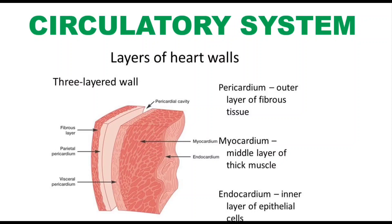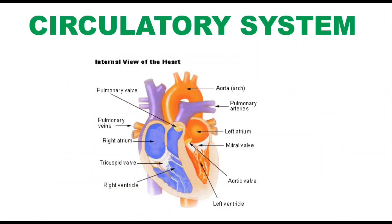The heart has three layers: the pericardium, which is the outer layer of fibrous tissue; the myocardium, which is the middle layer of thick muscle; and the endocardium, which is the inner layer of epithelial cells. In the internal view of the heart, the right atrium and right ventricle are separated by the tricuspid valve, and the left atrium and left ventricle are separated by the bicuspid or mitral valve, also called the atrioventricular septum.